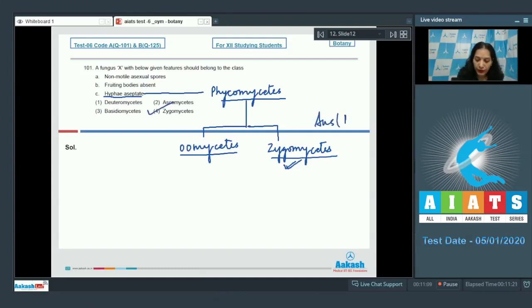Now you can read the other features also. Do they really belong to zygomycetes? Non-motile asexual spores - yes, zygomycetes produce sporangia spores which are non-motile. Oomycetes produce zoospores which are motile. Fruiting bodies are absent in phycomycetes.